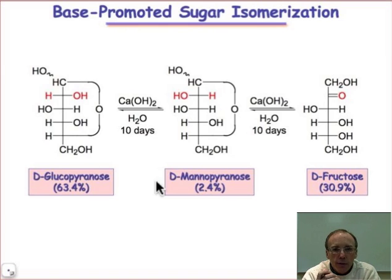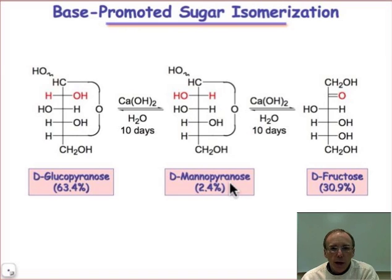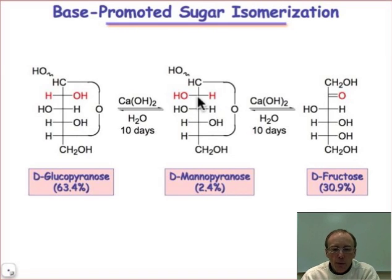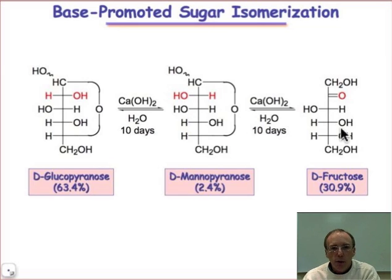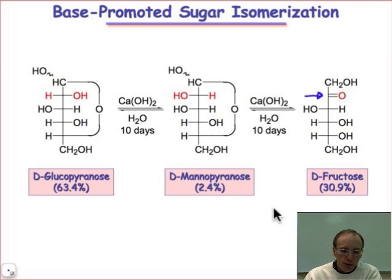In the case of D-glucose, you'd find that after several days about 64% is going to end up being the D-glucose form. There'll be about 2.5% of the C2 epimer — the C2 epimer of D-glucose is mannose. And you'll also end up with about 31% of this ketose, D-fructose, where the carbonyl group has migrated into position number 2.